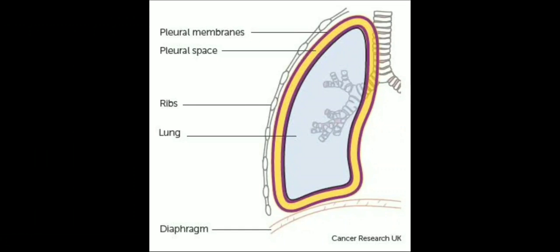First of all, when we observe the outer structure of the lung, we observe that it has two membranes called the pleural membranes. In between these pleural membranes is present a fluid called the pleural fluid. This fluid basically helps prevent any kind of damage caused to the lung when it is stretching and squeezing during the breathing process.